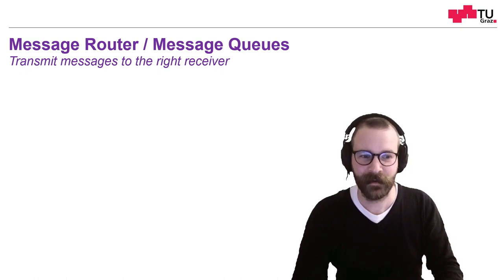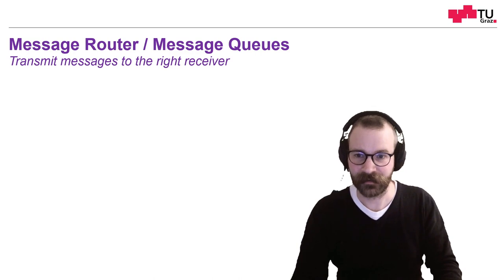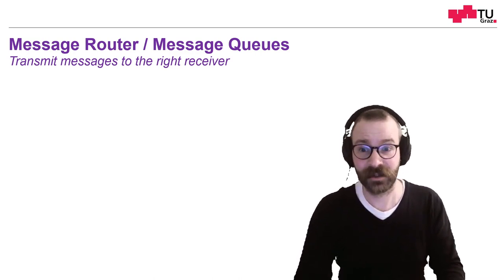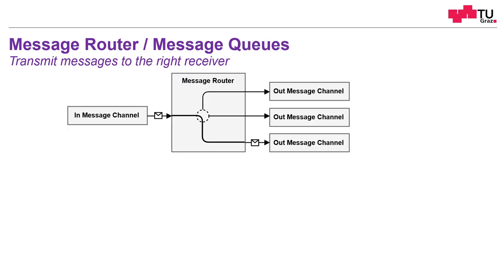The next pattern is the message router, and the idea is to transmit messages to the right receiver — sometimes it's also called message queues. We have a message channel where messages are sent, forming a queue. These messages arrive at the message router, which decides who is interested in the message, who is the receiver, and transfers it to the correct receiver or output channel.